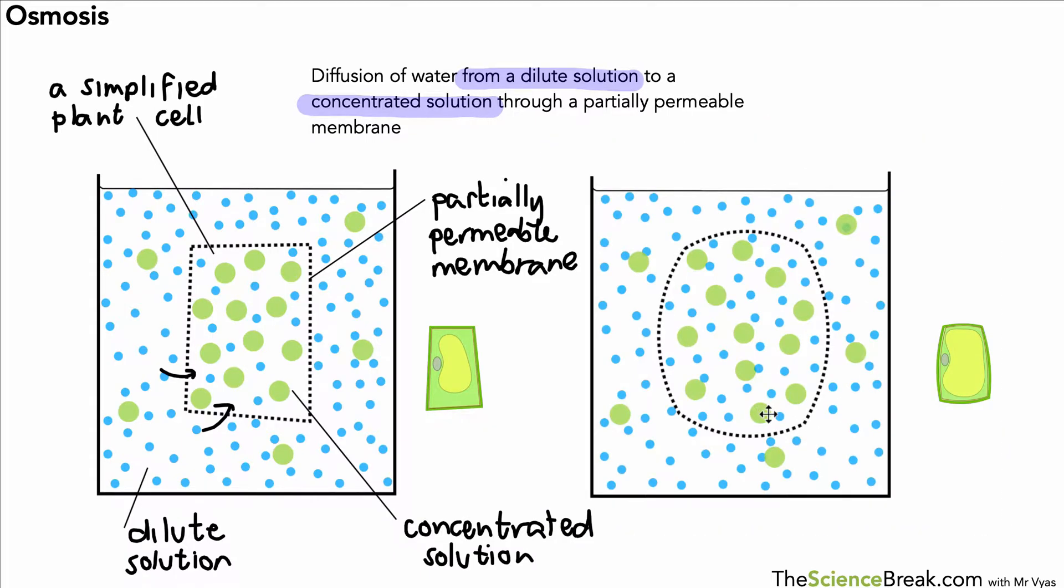So what would it look like in this case? The cell would swell. It wouldn't burst because there's a cell wall on the outside, but it certainly would swell. And we say the plant cell has become turgid. That just means tightly packed full of water. So that's one example.